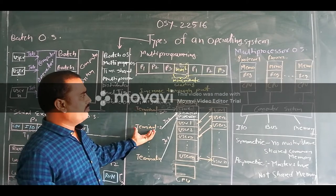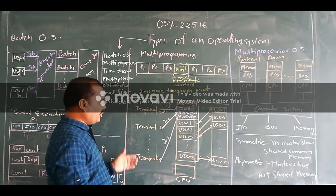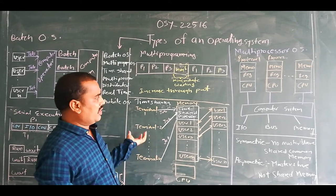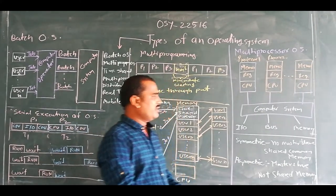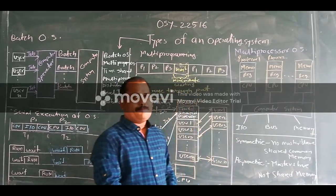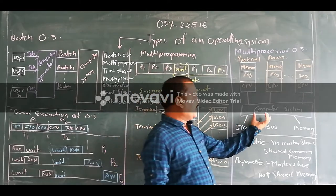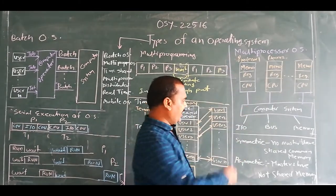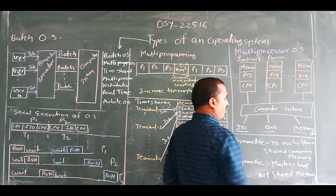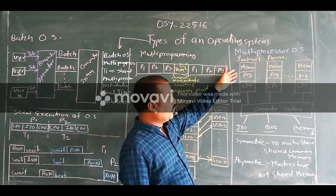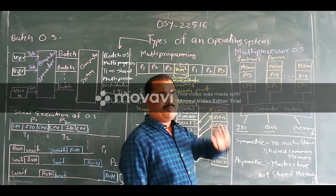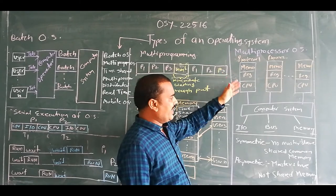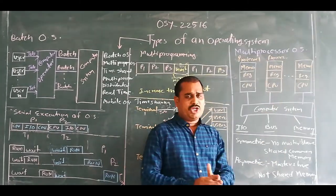Now totally opposite to the time-sharing system, there is a multiprocessor operating system. Here, the number of processors share a common computer system. The processors have private memory, registers, and CPU also, but they are connected through common devices, bus, and cable. So number of processors make their requests on a common computer system. In this way, the sharing and non-sharing of memory divides the multiprocessor system into two parts.